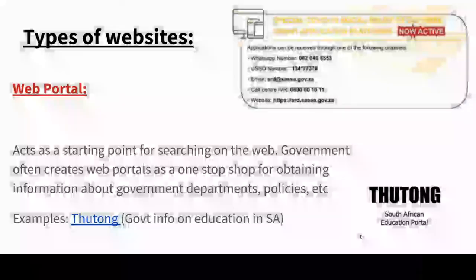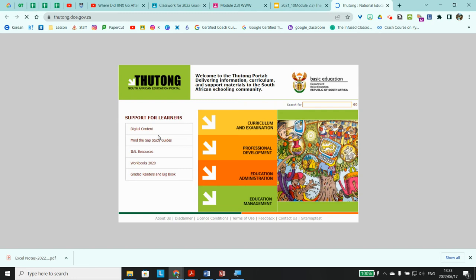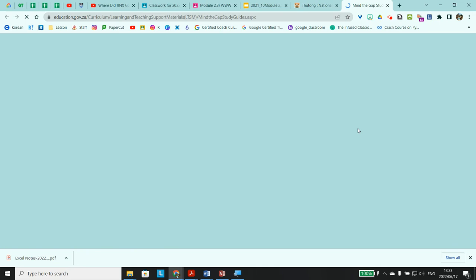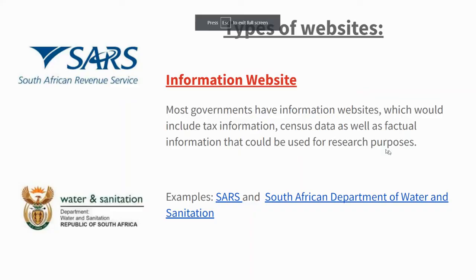Different types of websites: a web portal can be a starting point for searching on the web. Governments often create web portals as a one-stop shop for information from government departments and policies. This is an example of a South African education portal where learners can find support and study guides. SARS (South African Revenue Service) is an example of an information website, including tax information, census data, and factual information for research purposes.